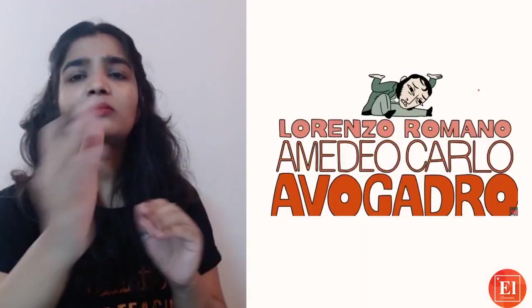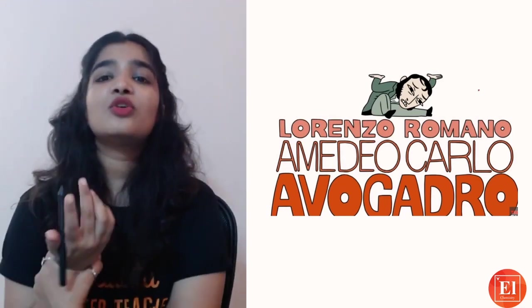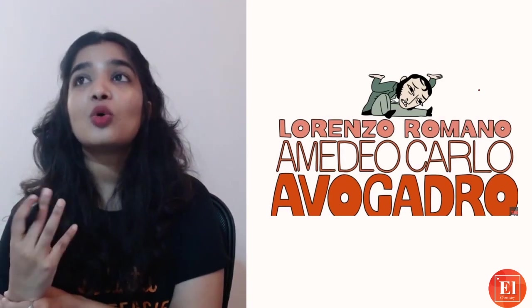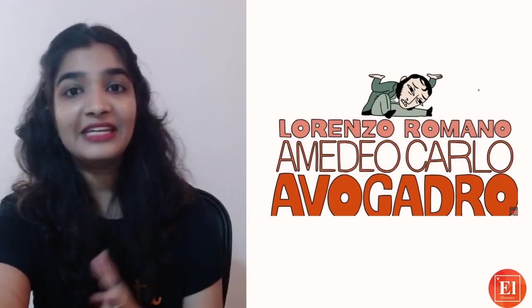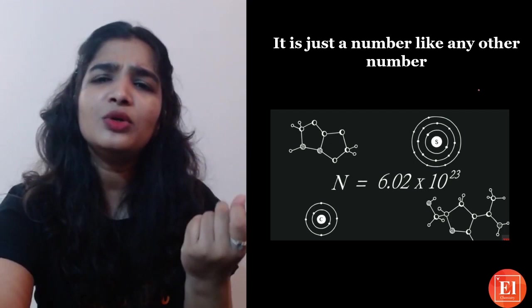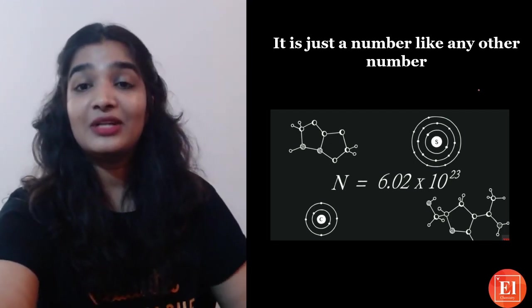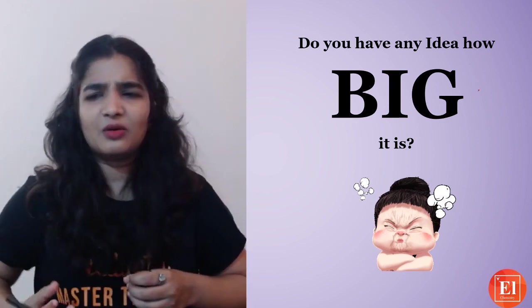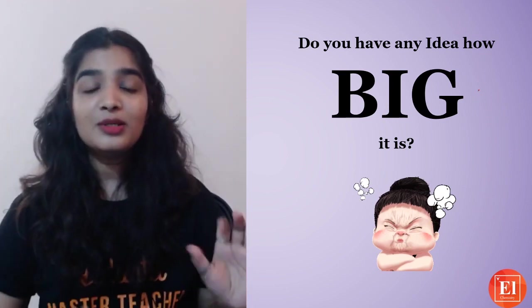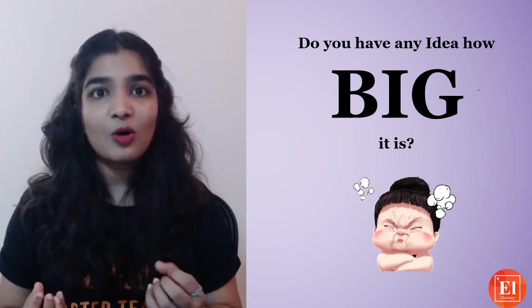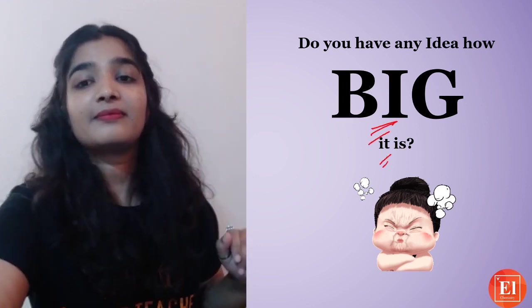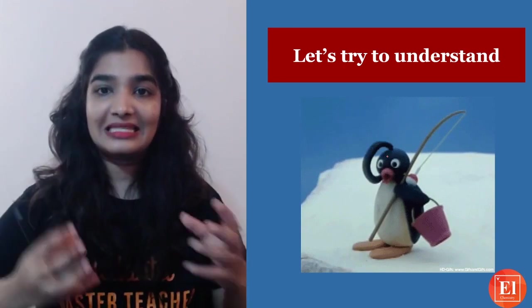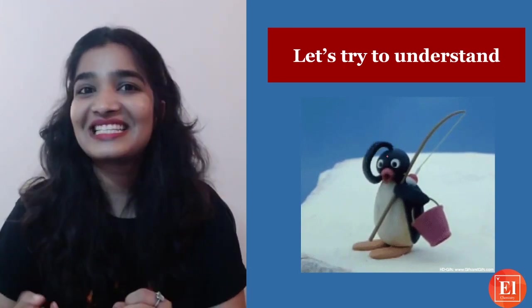Why is it called Avogadro's number? Lorenzo Romano Amedeo Carlo Avogadro was a chemist who contributed greatly to chemistry by giving Avogadro's law — the molecular law. In tribute to him, we named this number 6.023 × 10²³ Avogadro's number. As I said, it is just a number, but the problem is not about knowing the value — it's about imagining how big it truly is.